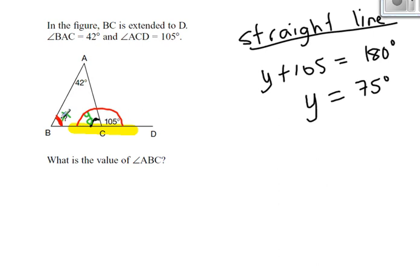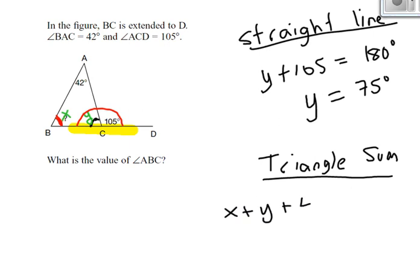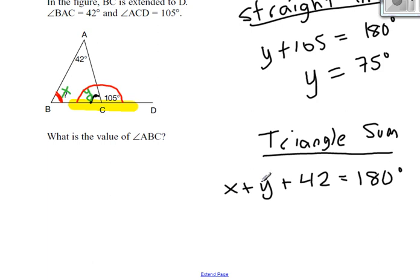We knew that Y plus 105 was 180, so I'm going to do 180 minus 105. Now I know angle Y is 75 degrees. Now look back at where X is. X is part of a triangle, so now I can say 'triangle'. We know the sum of the angles in a triangle is—did I say 360? I hope you caught that and said no, you're wrong. The sum of the angles in a triangle is 180. Therefore, X plus Y plus 42 equals 180.